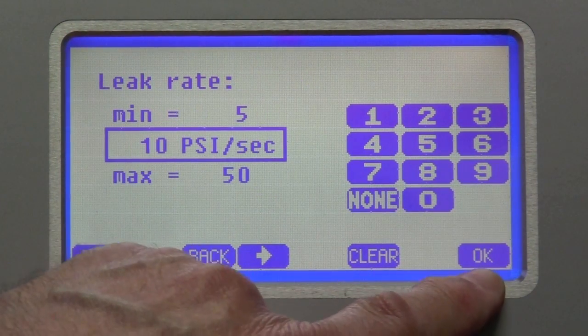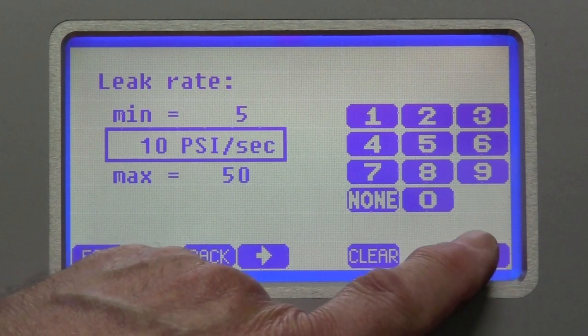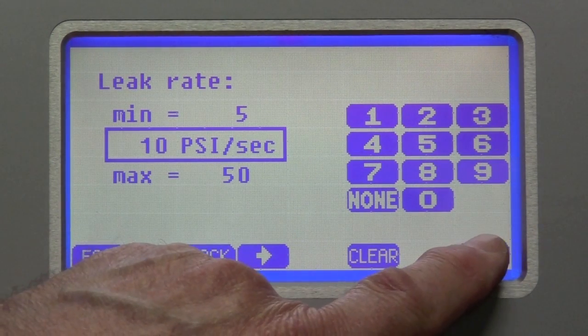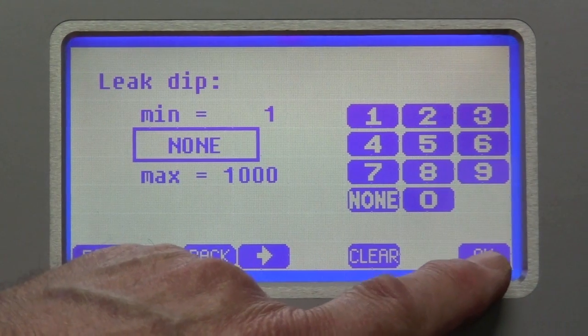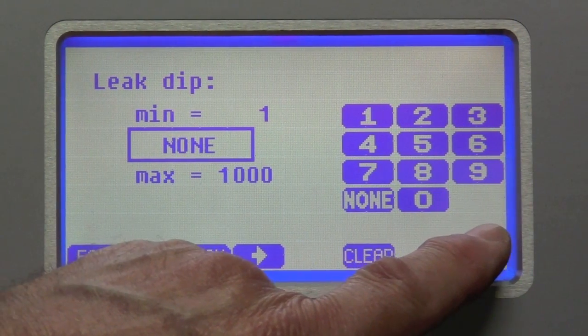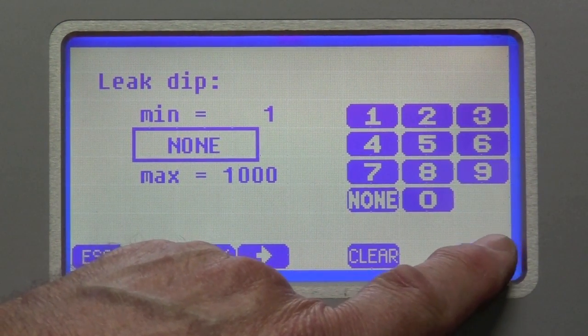Leak rate. We really don't care about that because we're going to burst the product. But I'm going to leave it at its default setting of 10 psi per second. Leak dip is default to none. I'm going to leave it that way.